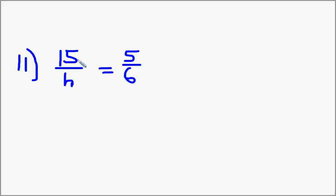So what we could do is multiply 15 times 6, and that's 90. And that should equal 5 times h. Once again, I'm just taking numerator. 15 times 6 is 90. 5 times h is 5h.